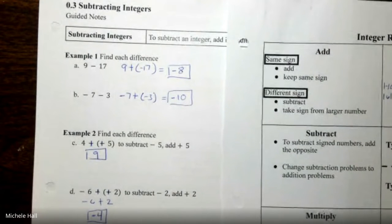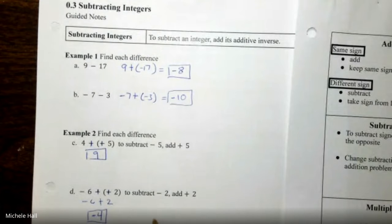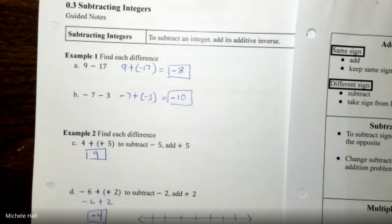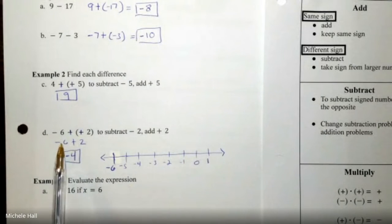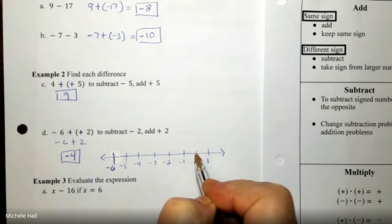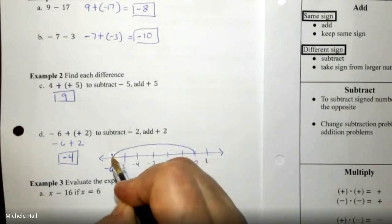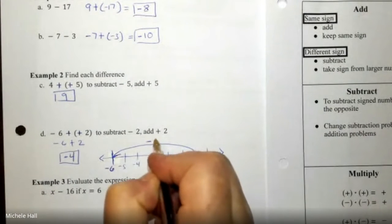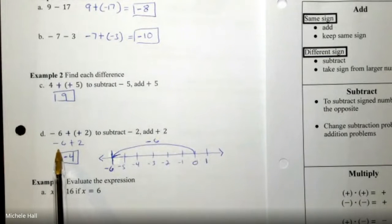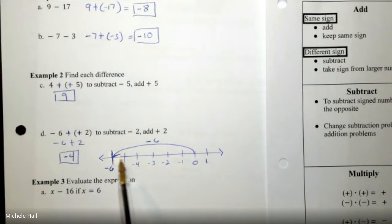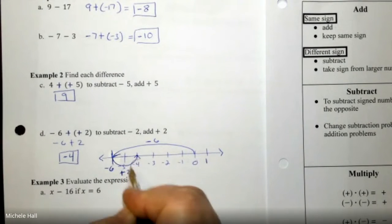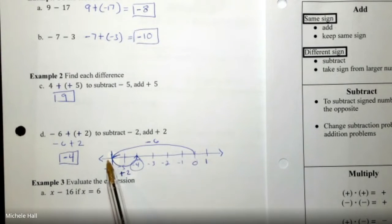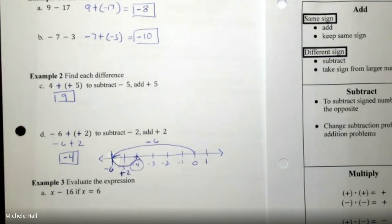We can picture a number line. Starting at negative 6, we go from 0 in the negative direction to negative 6. Then we need to go in the positive direction — to the right — positive 2. We're going in two different directions. When going left and then right, or right and then left, we're going in two different directions, so we subtract.